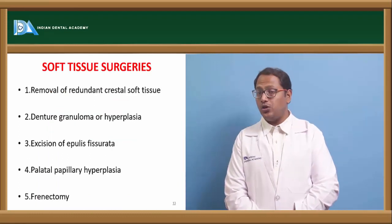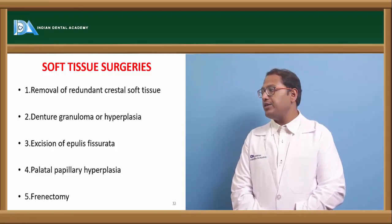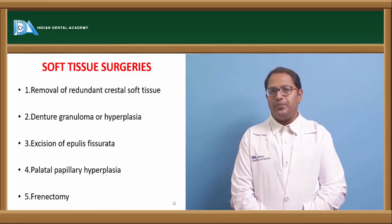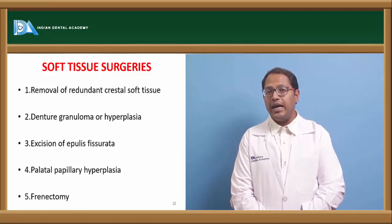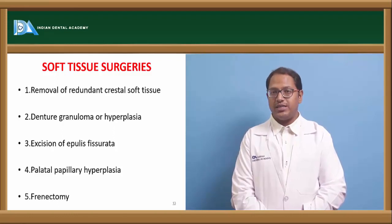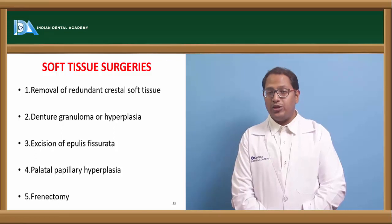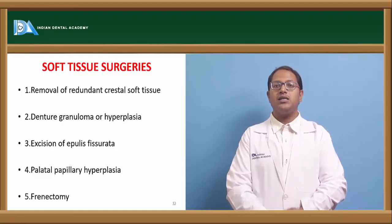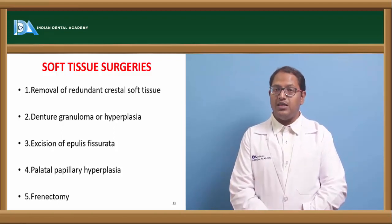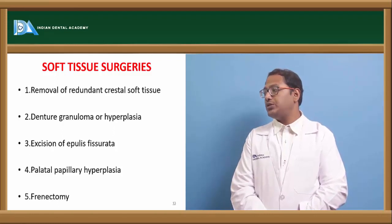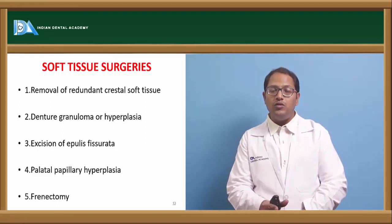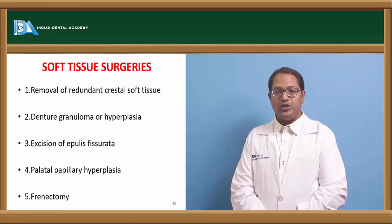Coming to soft tissue surgeries — these can include removal of redundant or flabby soft tissue. Flabby tissue develops because when the residual ridge starts resorbing, the body increases the mass of the mucosa to protect itself. This increased soft tissue becomes redundant or flabby. While making a denture, this is harmful — we cannot afford to have a denture on mobile tissue. So soft tissue surgeries are indicated in these cases.